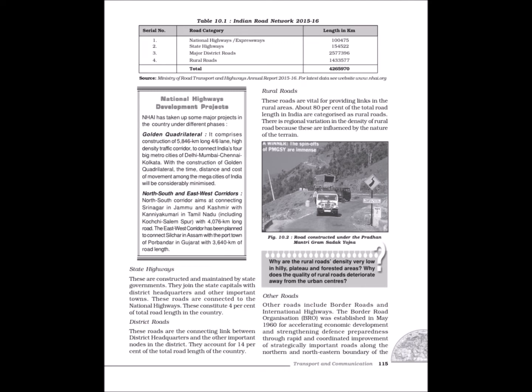Indian Road Network (as per 2005): National Highways — 65,769 km, 2% of total road length; State Highways — 1,28,000 km, 4% of total road length; Major District Roads — 4,70,000 km, 14% of total road length; Rural Roads — 26,50,000 km, 80% of total road length. State Highways are constructed and maintained by state governments, joining state capitals with district headquarters and other important towns, connected to national highways, and constitute 4% of total road length.